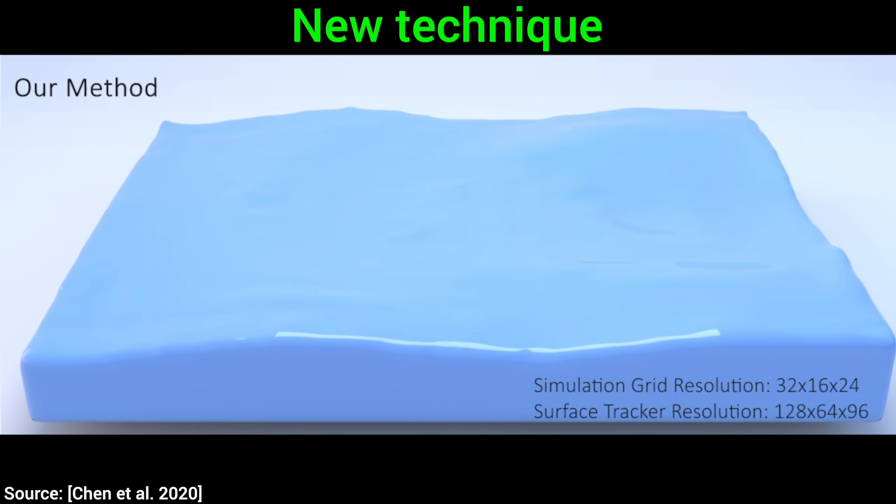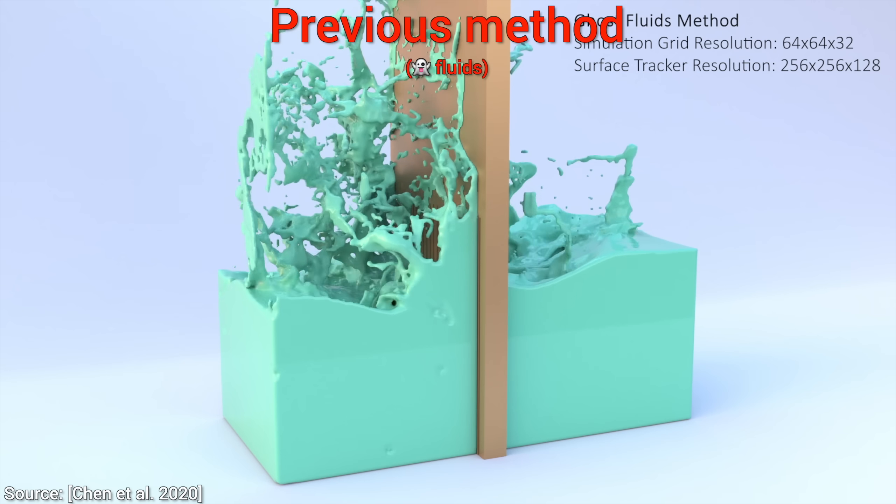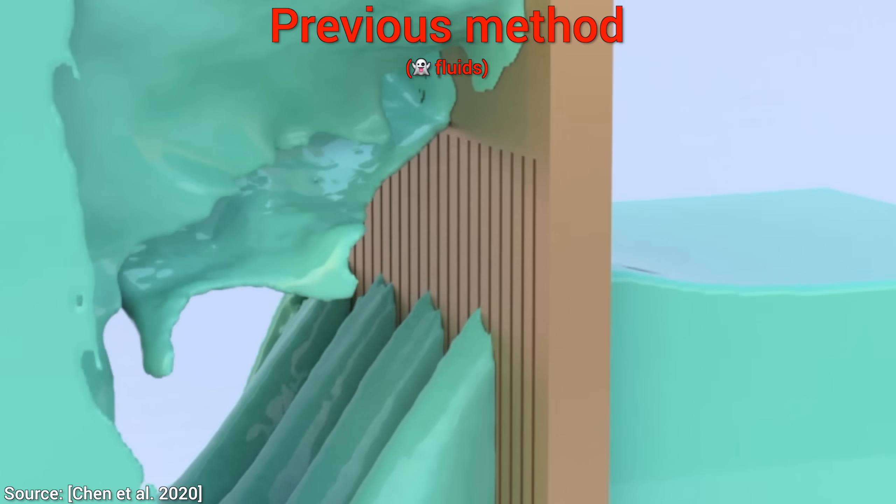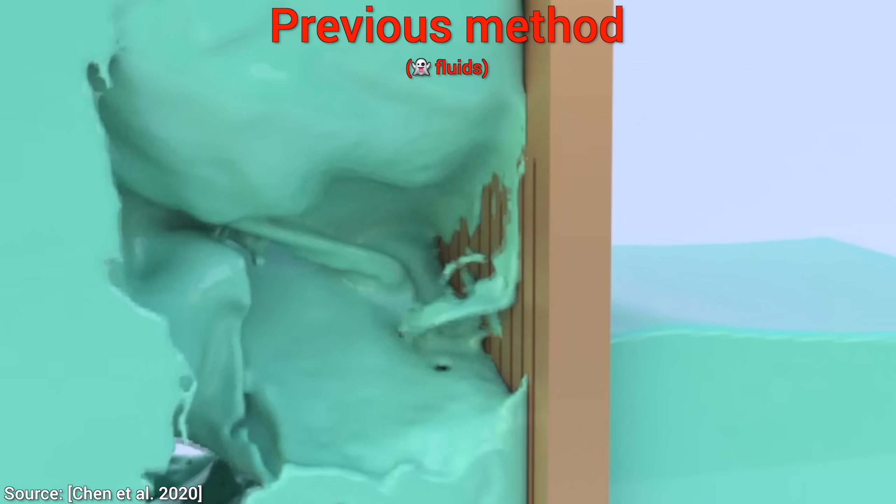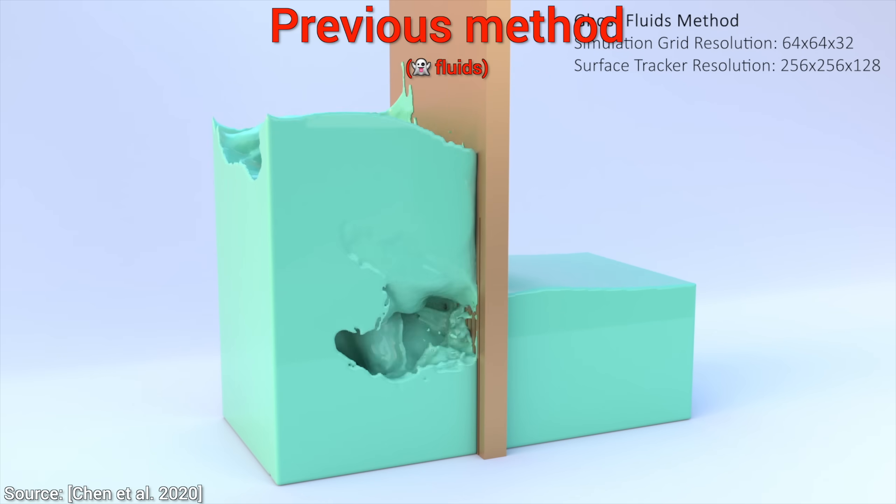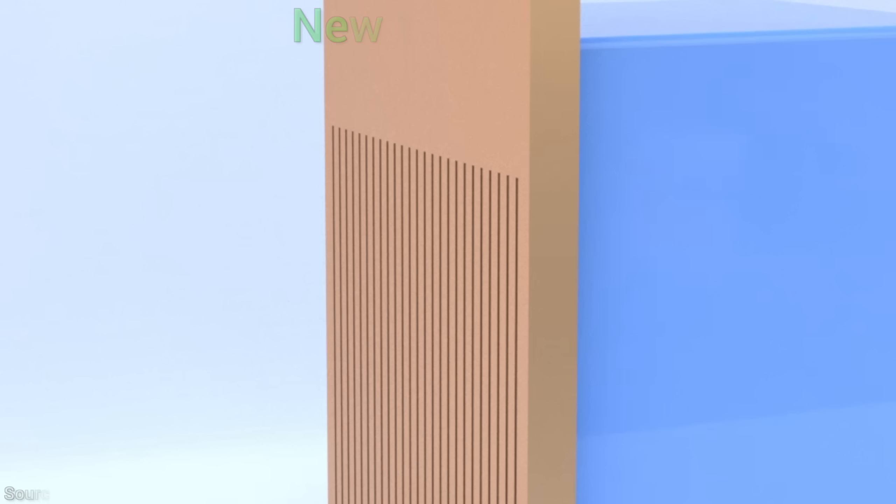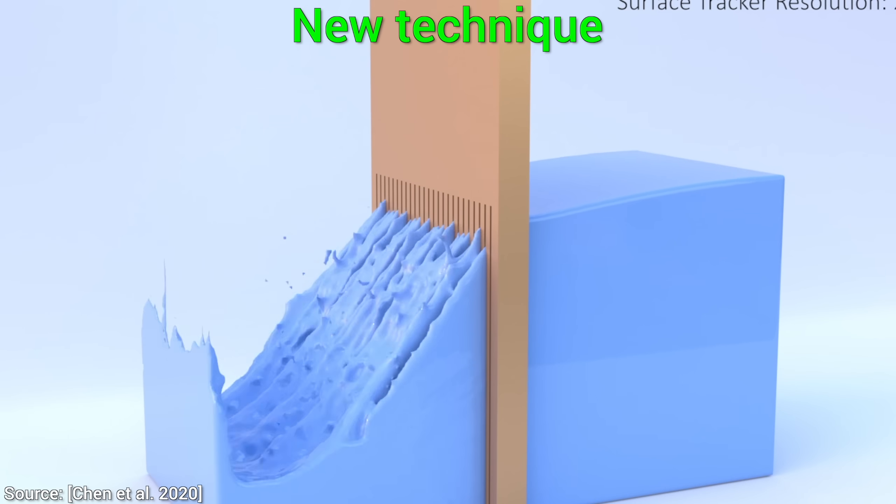But this previous ghost fluid method is perfectly fine when it comes to a dam break, until you slow it down and look carefully. Do you see it? Oh yes, some of the slits are completely clogged. This is not working well in the presence of thin structures. Yes, once again, thin structures. The two-minute papers special! So, how does the new technique perform? Look, the slits are now working correctly. Thank the papers!